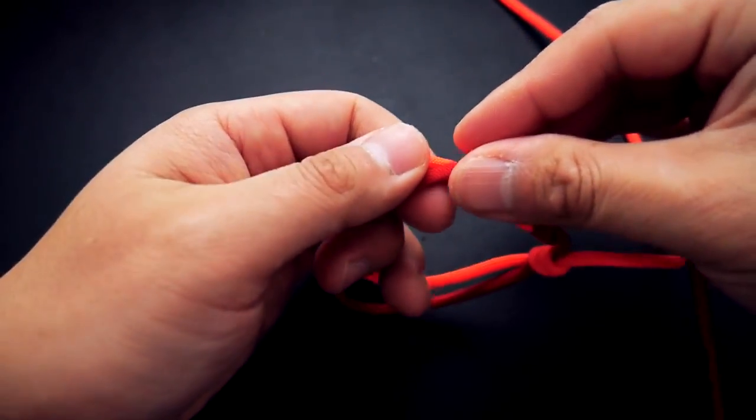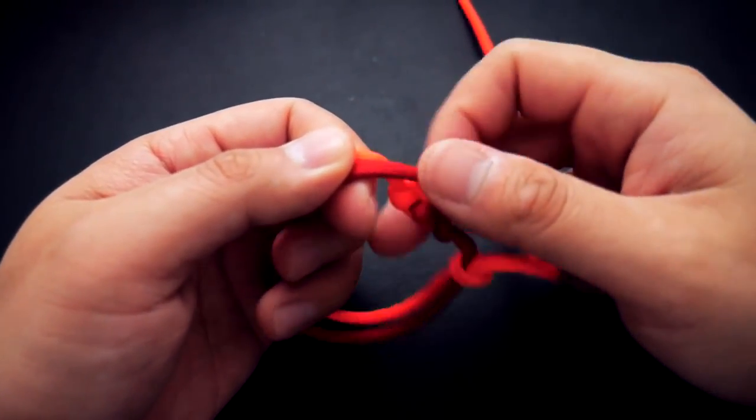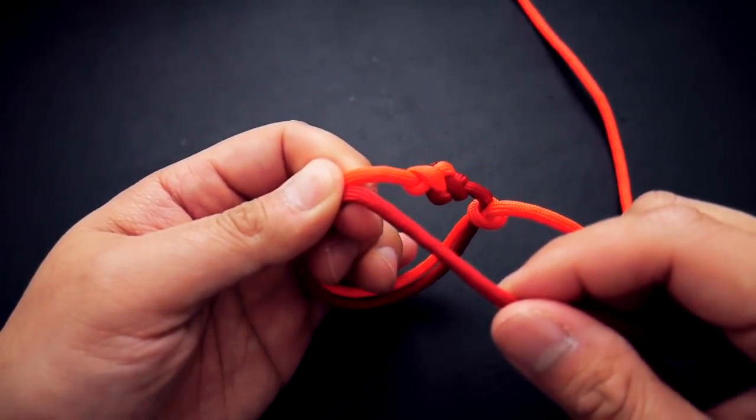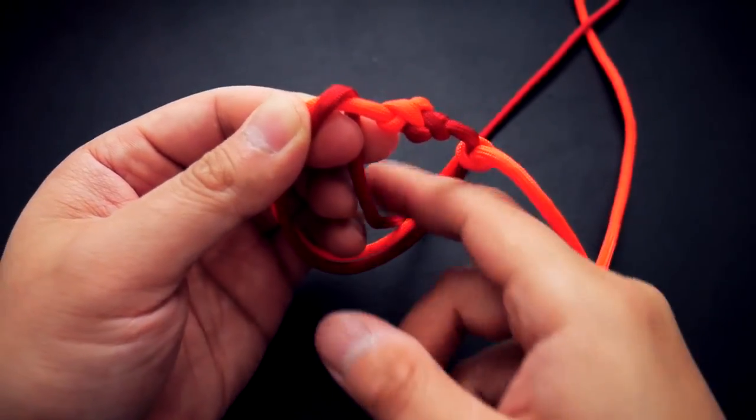With that done, we're going to go to the other side now. You may have to adjust the length of these cords or the amount of length in between them just for the bracelet size, but you're going to do the exact same thing on the other side. I've got my red next to my orange.